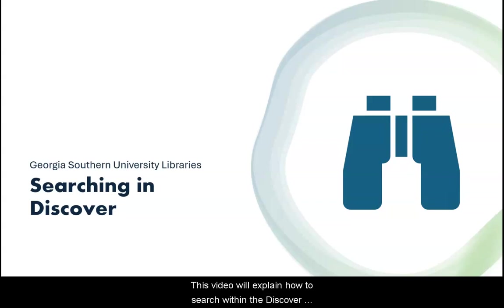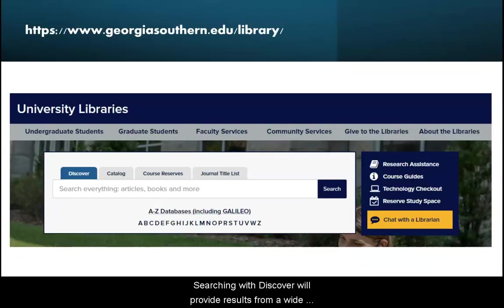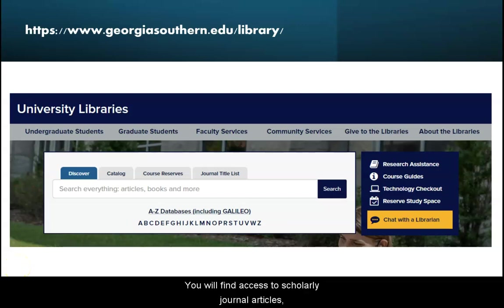This video will explain how to search within the Discover database search engine. It is an excellent tool to search many of Georgia Southern Library's databases all at once. Searching with Discover will provide results from a wide variety of disciplines and sources. You'll find access to scholarly journal articles, newspapers, magazines, ebooks, and more.